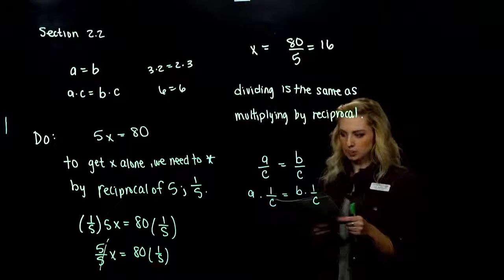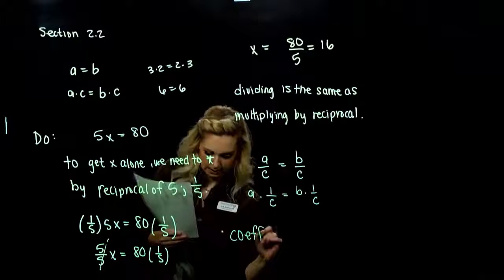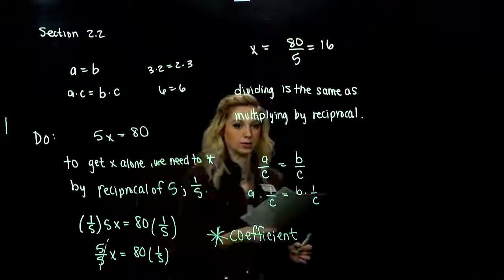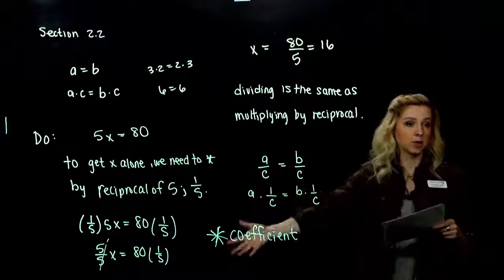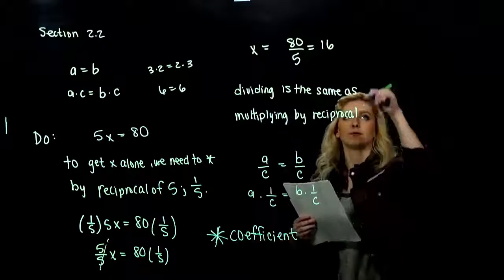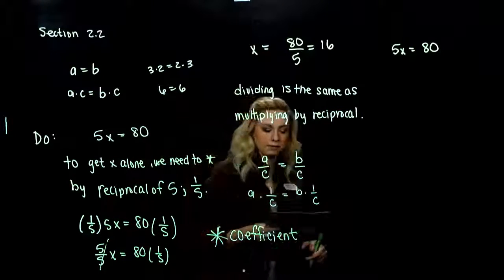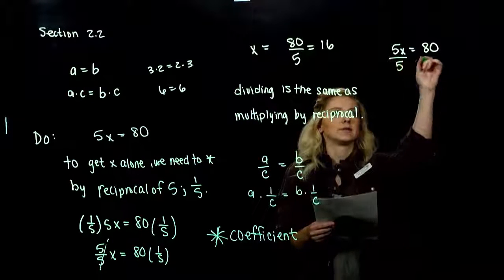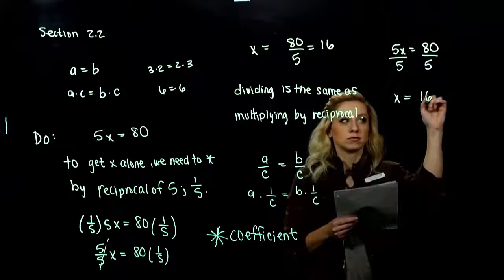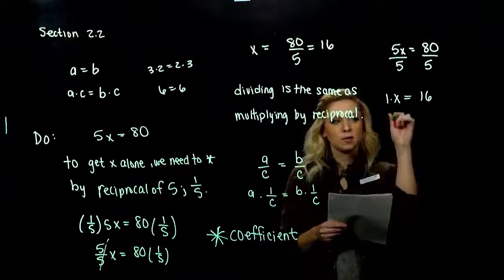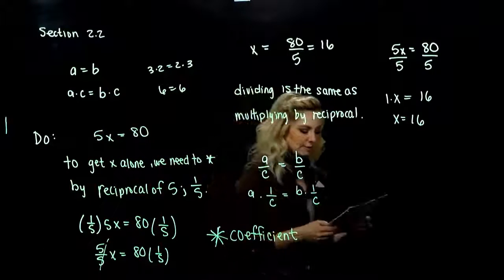In an expression like 23x, the number 23 is called the coefficient. Whenever we have a constant out on the front of a variable, that constant is called the coefficient — a very important term you'll see a lot in math. Let's take that same example and instead of multiplying by the reciprocal, let's use division to see if we get the same thing. So 5x equals 80: instead of multiplying by the reciprocal of 5, we can just divide both sides by 5. Because 5 divided by 5 gives me 1 — those cancel out — and we're left with x equals 16. Same result, and in this case it's easier just to divide by 5.